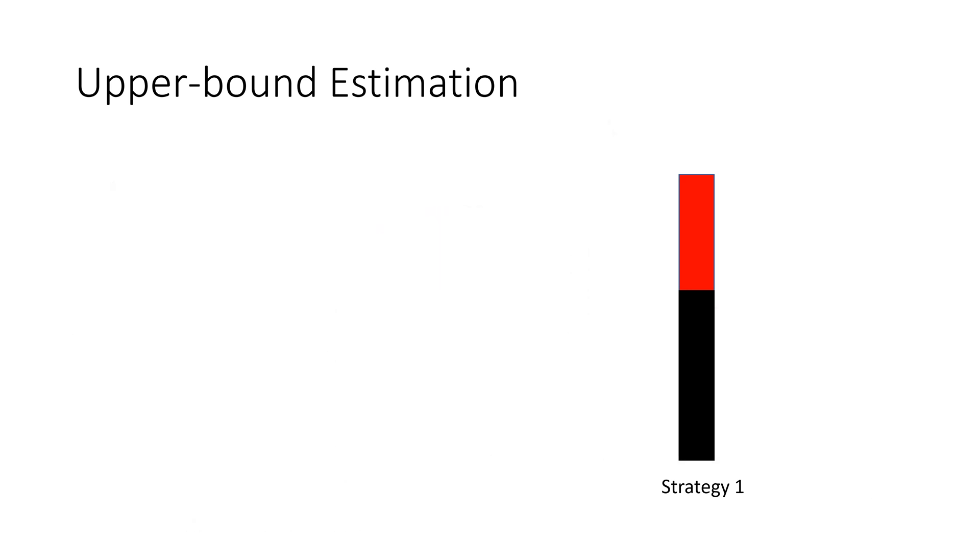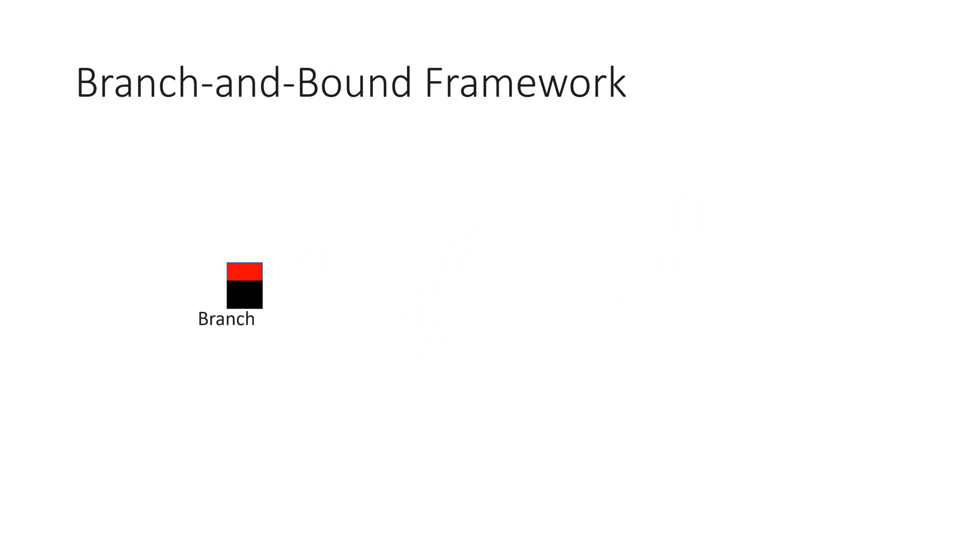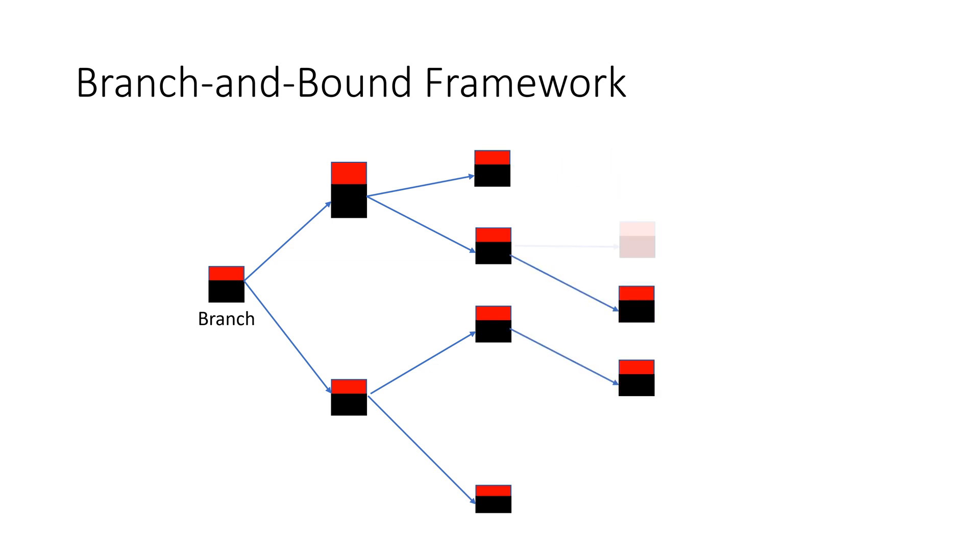For the branch and bound framework, think of each strategy as a branch. We explore each branch by considering a different combination of billboards. For those who have small upper bound influence, we will prune it. For the branches having an ideal upper bound, we explore them further. The searching process will terminate until finding the solution.